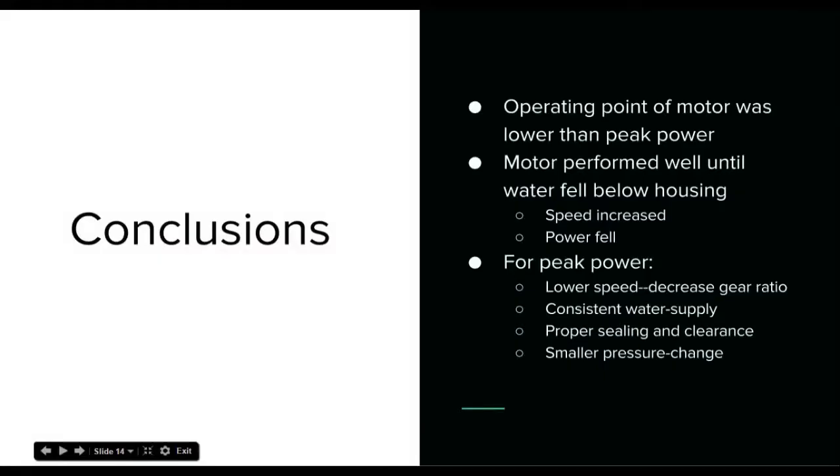Based on the analysis on the previous slide, it's clear that the operating point of our motor was much lower than what it could have been. We operated at a much lower power than peak power, about 5.5 watts. We were operating around 1 watt on average. And one reason for that is that the pump performed fairly well while the water level was above the pump housing. And then it did not perform at all when the water level fell below that housing entrance, causing the speed to increase and the power to fall.